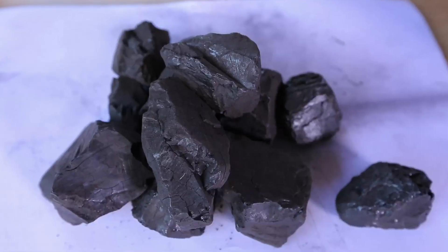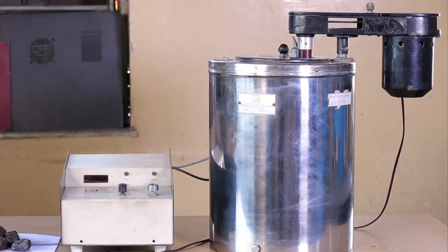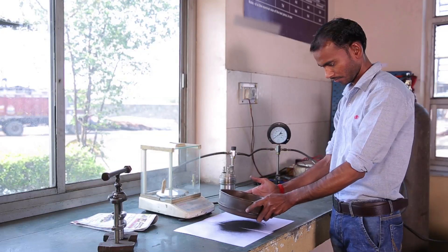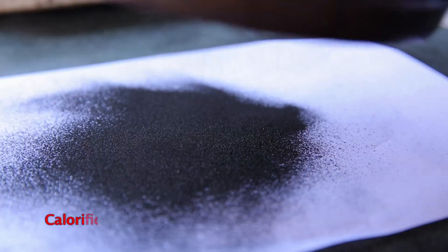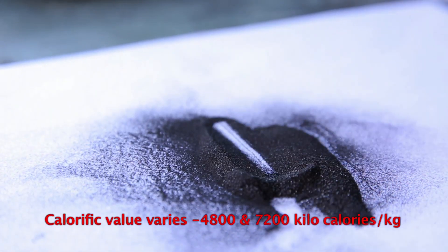The calorific value of any fuel can be determined in a laboratory using a bomb calorimeter. Generally, the gross calorific value varies between 4,800 and 7,200 kilocalories per kilogram.